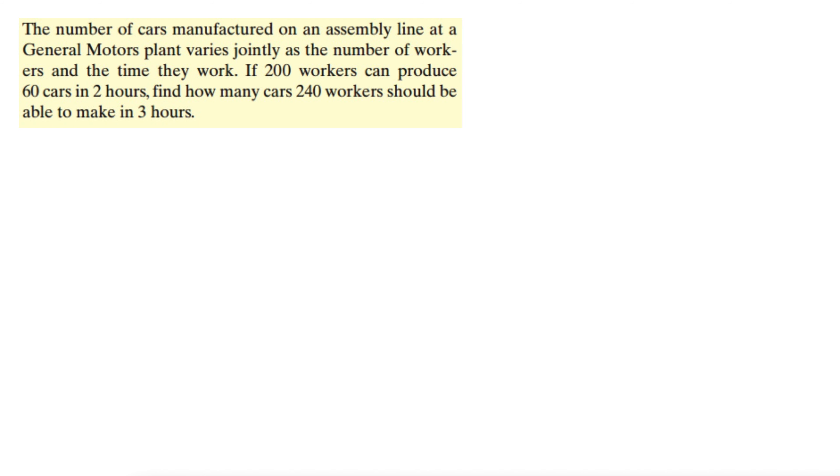This exercise tells us that the number of cars manufactured on an assembly line at a General Motors plant varies jointly as the number of workers and the time they work. If 200 workers can produce 60 cars in 2 hours, find how many cars 240 workers should be able to make in 3 hours.